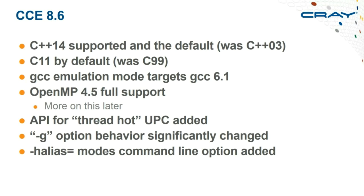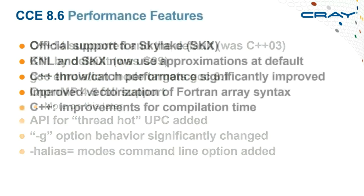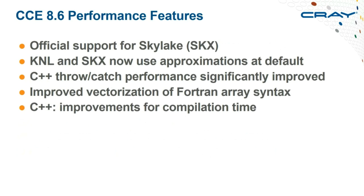CCE 8.6 also brought full OpenMP 4.5 support, performance improvements for UPC, and a changed behavior for the '-g' debug flag — I'll explain that shortly. There's a new aliasing flag that gives finer control over optimization potential based on aliasing type in a source file. While aliasing isn't a problem for Fortran due to language definition, it can inhibit C optimizations. There's also new hardware support for Skylake.